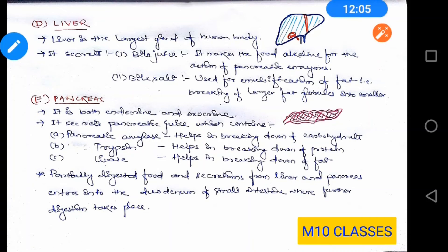When food passes from the stomach to the small intestine, two important glands are involved: liver and pancreas. Liver is the largest gland in the human body. It secretes bile juice and bile salts. The food coming from the stomach is acidic, but pancreatic digestive enzymes need an alkaline medium, so bile juice makes the food alkaline for the action of pancreatic enzymes. Bile salts are used for emulsification of fat — that is, breaking down larger fat globules into smaller fat globules.